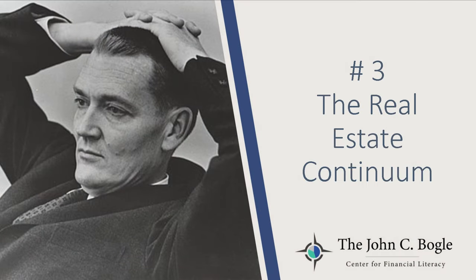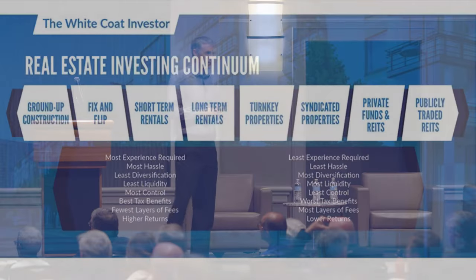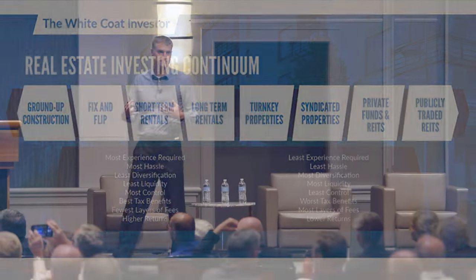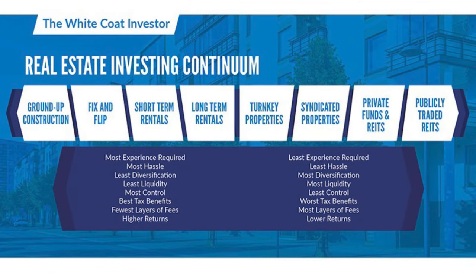Now, the most important slide in this presentation: the real estate continuum. On the left are real estate developers — ground-up construction, getting permits, breaking ground, building the building. Next along the spectrum is fix and flip: you buy a place, fix it up, renovate it, and sell it. Then come short-term rentals — running a hotel-type business, Airbnb, Vrbo, where people rent for three to seven days. Next is long-term rentals — you still own the whole property but rent by the month or year. After that is a turnkey property: you still own it, but you've hired everything out — someone else finds it, puts the tenant in, manages it, repairs it, sells it. All you do is own it.